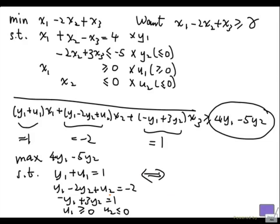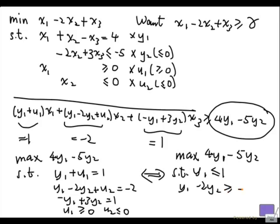We can rewrite this. So u1 has to be non-negative, that means y1 has to be at most 1. And if y1 is at most 1, we can get a value for u1. And using the same reasoning, we can rewrite the second equation here as y1 - 2y2 greater than or equal to -2, and -y1 + 3y2 equal to 1. And remember, we actually have to have y2 less than or equal to 0 in here.